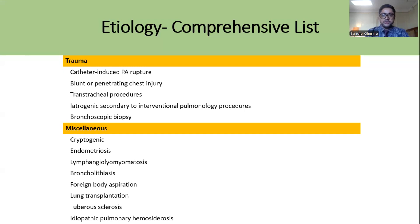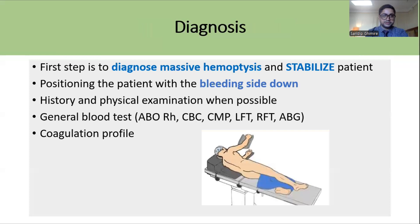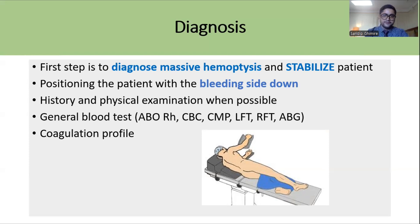Every cause of hemoptysis is a potential cause of Massive Hemoptysis, so the list is very comprehensive. However, we must remember the most common causes. The most important thing in diagnosis is to recognize Massive Hemoptysis promptly; ignoring a patient with hemoptysis who then develops Massive Hemoptysis carries a high chance of mortality. The first priority is to diagnose and stabilize the patient before proceeding to further diagnostic tests and treatment.